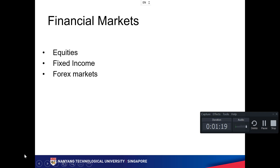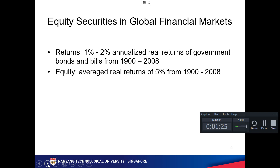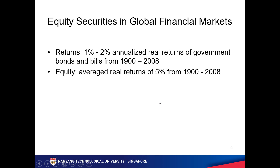The real return for bonds and bills is about one to two percent, which is quite low — and that's because there's no risk. For equity, the average real return is about five percent over the last hundred years. So of course the risk is also higher for equity.